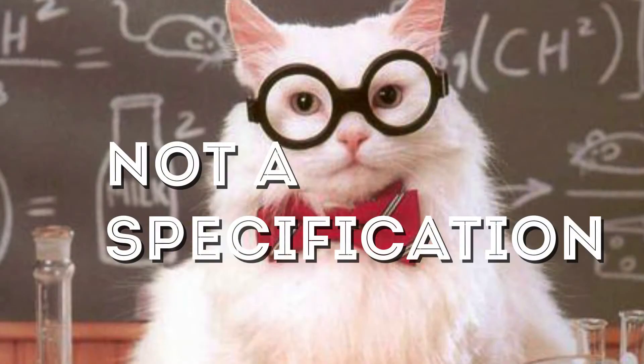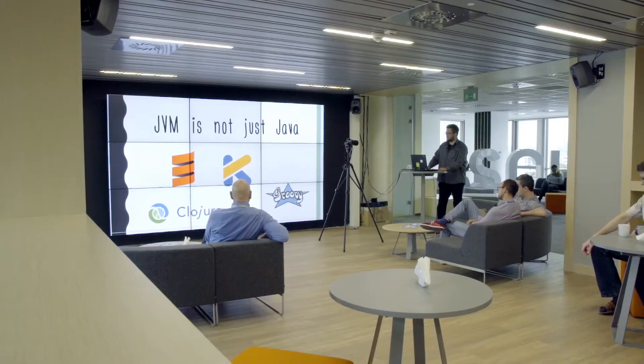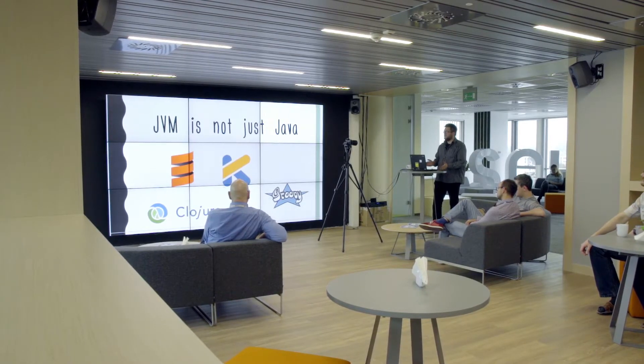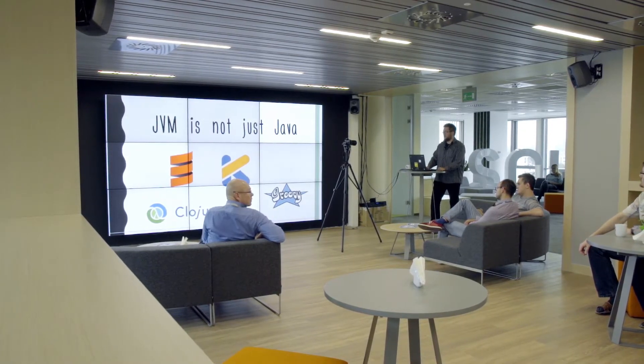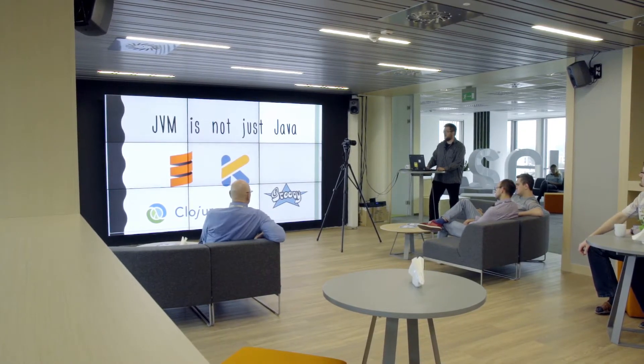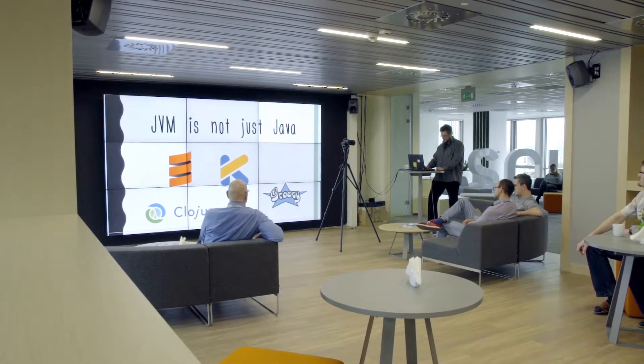The last reason is that they are not a specification — they are just a part of the Java core. And today, the JVM is not just Java. There are many different languages that can be used interoperatively, and streams are not a good solution for that.